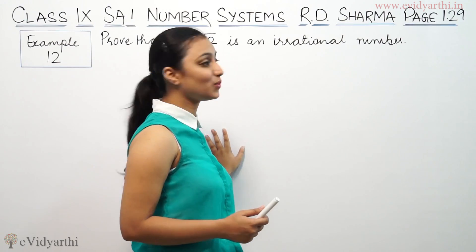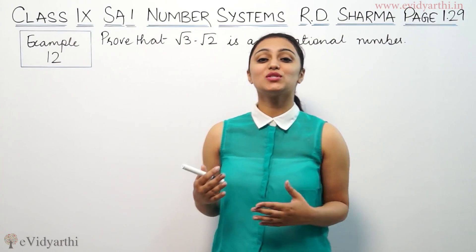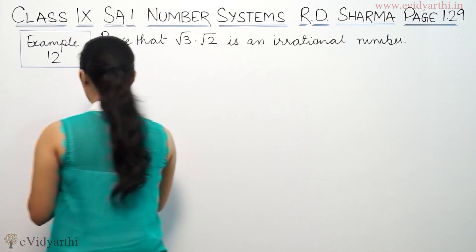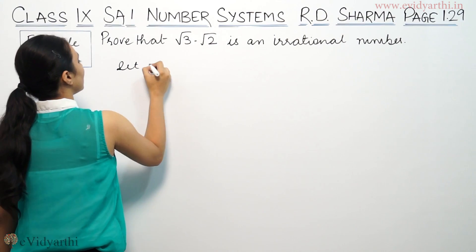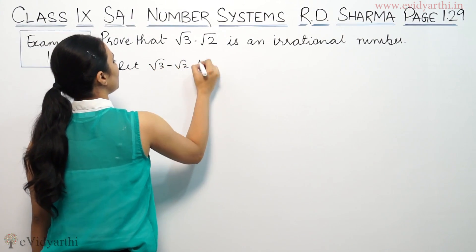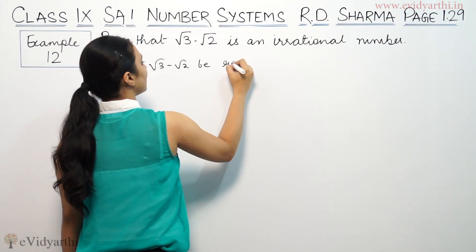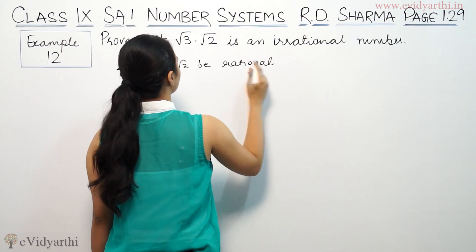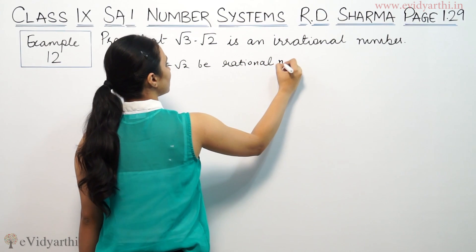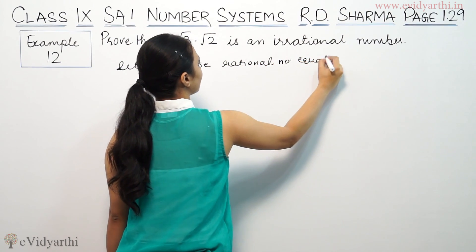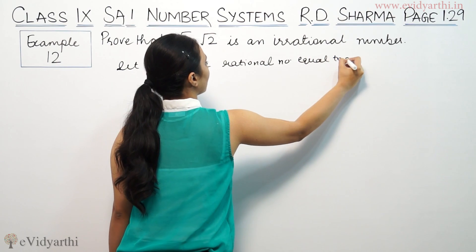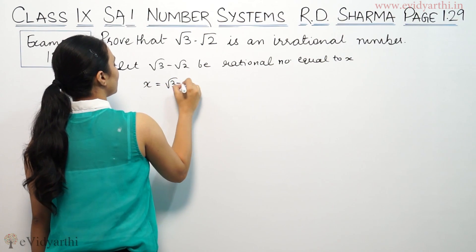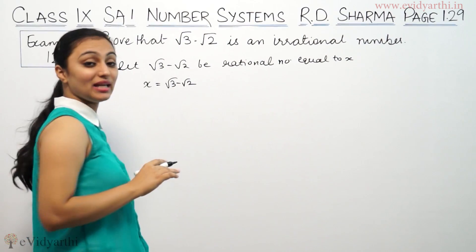We need to prove that √3 minus √2 is a rational number — so I will check whether this is a rational number. Let us assume √3 minus √2 is rational, and let that number be equal to x. So from earlier, √3 minus √2 equals x, which is a rational number.